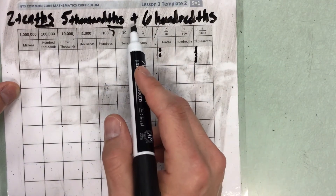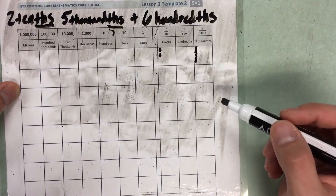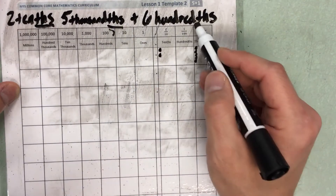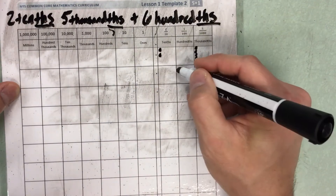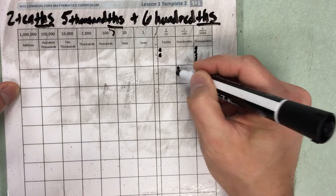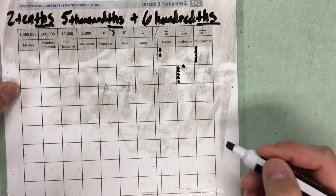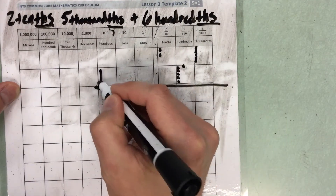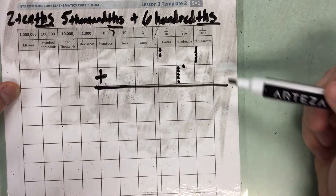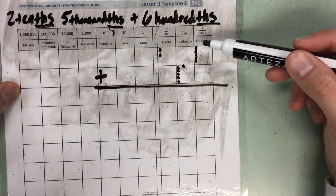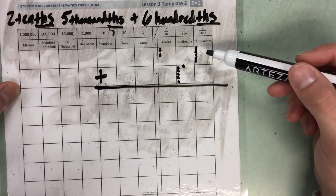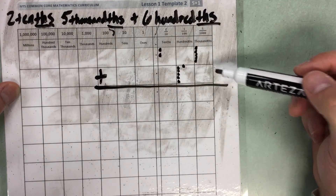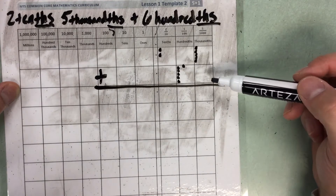Then I'm going to look for 6 hundredths. So I'm going to go to the hundredths column and I'm going to add 6 dots. Now I can just add these two numbers together, starting with my lowest place value. Go ahead and pause this video, add your place values, and see what you get.